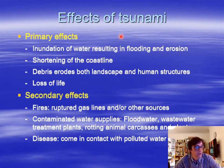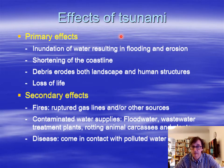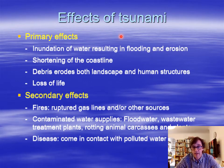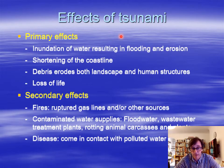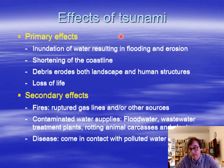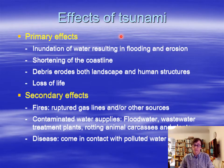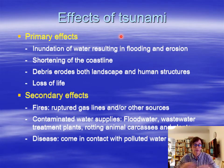To summarise the effects of the tsunami — primary effects and then secondary effects. Primary: the inundation of water resulting in flooding and erosion. You can actually shorten the coastline as well — as we saw, Banda Aceh's coastline was eroded away. Debris erodes both the landscape and human structures, and there is a huge loss of life. Secondary effects — much like with earthquakes — cause fires from ruptured gas lines and other features. You can have a lot of contaminated water supplies: wastewater treatment plants can be damaged and ripped out. Rotting animal carcasses moved around — a lot of animals are killed and drowned from these events — and rotting plants. Because of that, you often get a lot of disease in the weeks following a tsunami from people coming in contact with polluted water or soil.